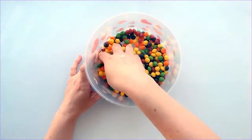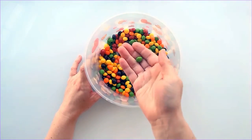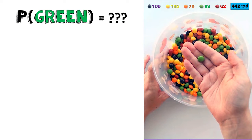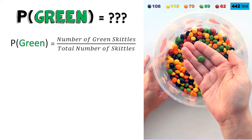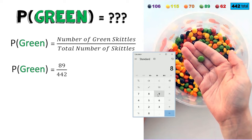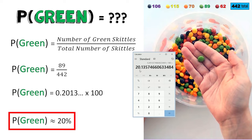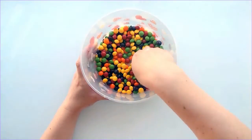For the second problem, we are going to look at the probability of randomly choosing a green Skittle. Similar to the first problem, we would need to take the number of green Skittles and divide it by the total number of Skittles. I will divide 89 by 442, then multiply the decimal by 100. I have approximately a 20% chance of randomly choosing a green Skittle.